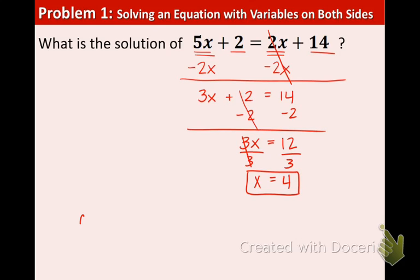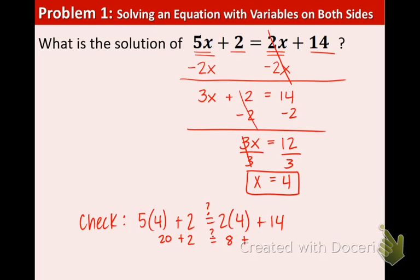Now the way that we would check real quick. We take that 4 and plug it in for the x on both sides. 5 times 4 + 2 equals 2 times 4 + 14. So as you can see, I went up to the original equation and I just plugged in the 4 for the x on both sides. Let's do our mental math real quick. 5 times 4 is 20. 20 + 2. And then 2 times 4 is 8. 8 + 14. That's 22 on the left and 22 on the right. So it works.